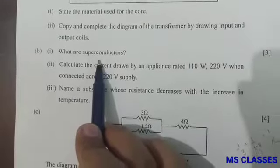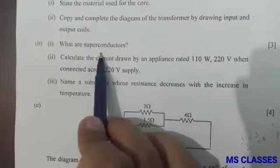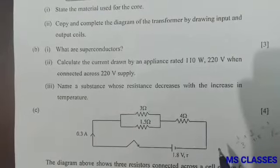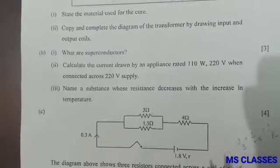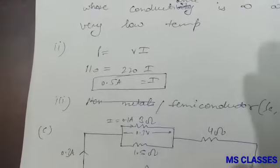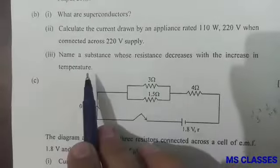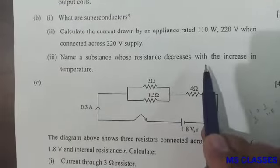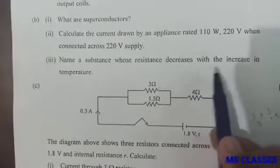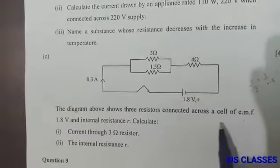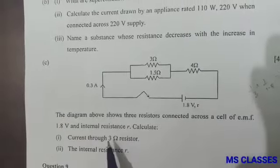Part (b): First, what are superconductors? These are those materials whose conductance is infinite or resistance is zero at very low temperature. Second, calculate the current drawn by an appliance rated 110 watt, 220 volt when connected across 220 volt supply. Here, power is V into I, so from here we find I as 0.5 ampere. Third, name a substance whose resistance decreases with the increase in temperature. The answer is semiconductor. You can give silicon, germanium, etc.